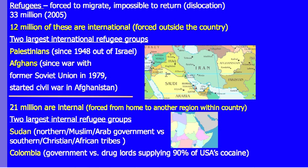The 21 million internal refugees are led by Sudan, which until 2011 was one country and split into northern and southern Sudan largely because of civil war and violence between the northern Muslim-Arabic-controlled government and the southern Christian-African tribes. Colombia is another area with significant internal migration, largely due to drug violence and conflict with the government.